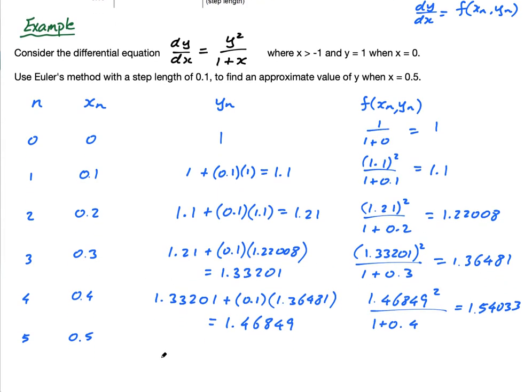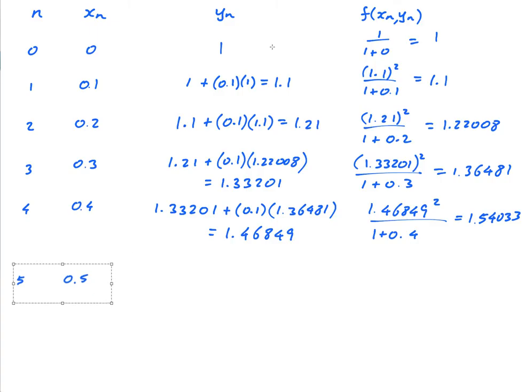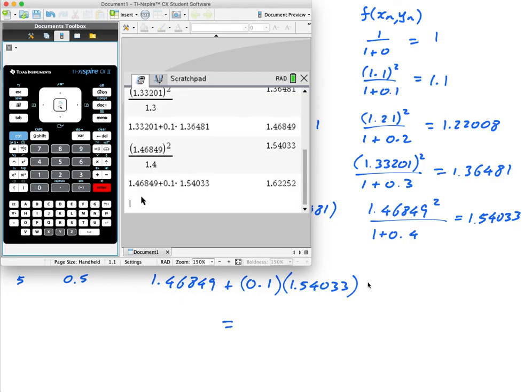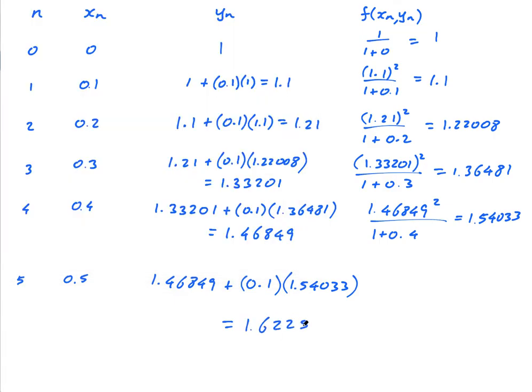And then finally. This one. I'm going to bring it down a little bit here. To there. So, this is 1.46849 plus 0.1 times this. 1.54033. And this equals. This equals 1.46849 plus 0.1 times 1.54033. equals 1.62252. 1.62252.